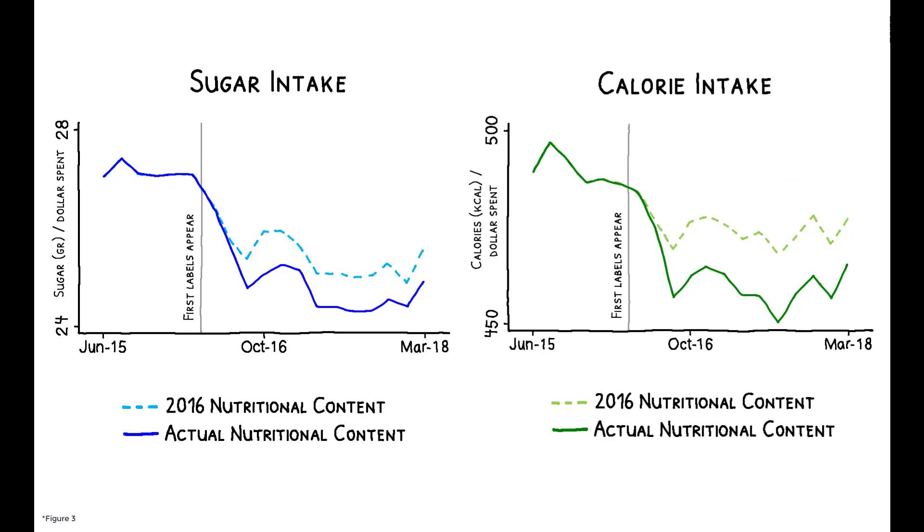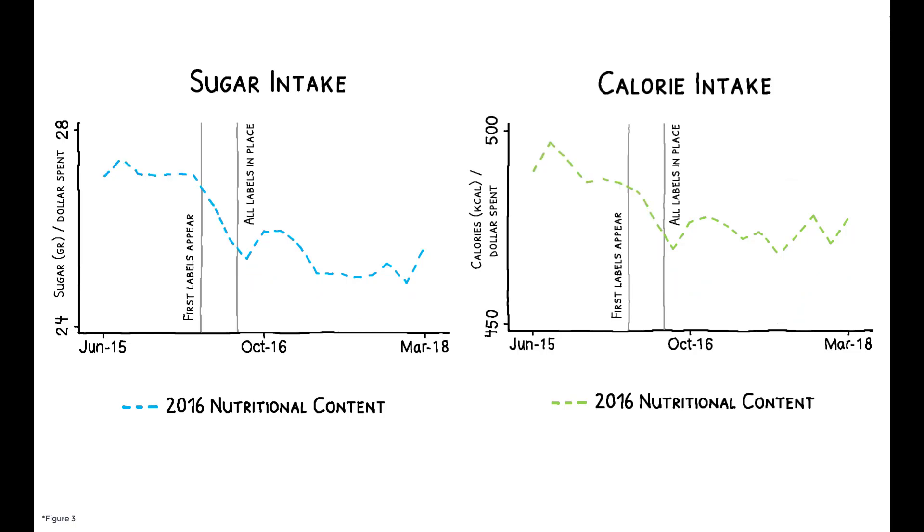These lines indicate when labels first appeared in some supermarkets, and these lines show when they became mandatory for every product in every store. The dashed lines calculate sugar and calorie totals after fixing products' nutritional content at their pre-Food Act levels, while the solid lines use actual nutritional content.